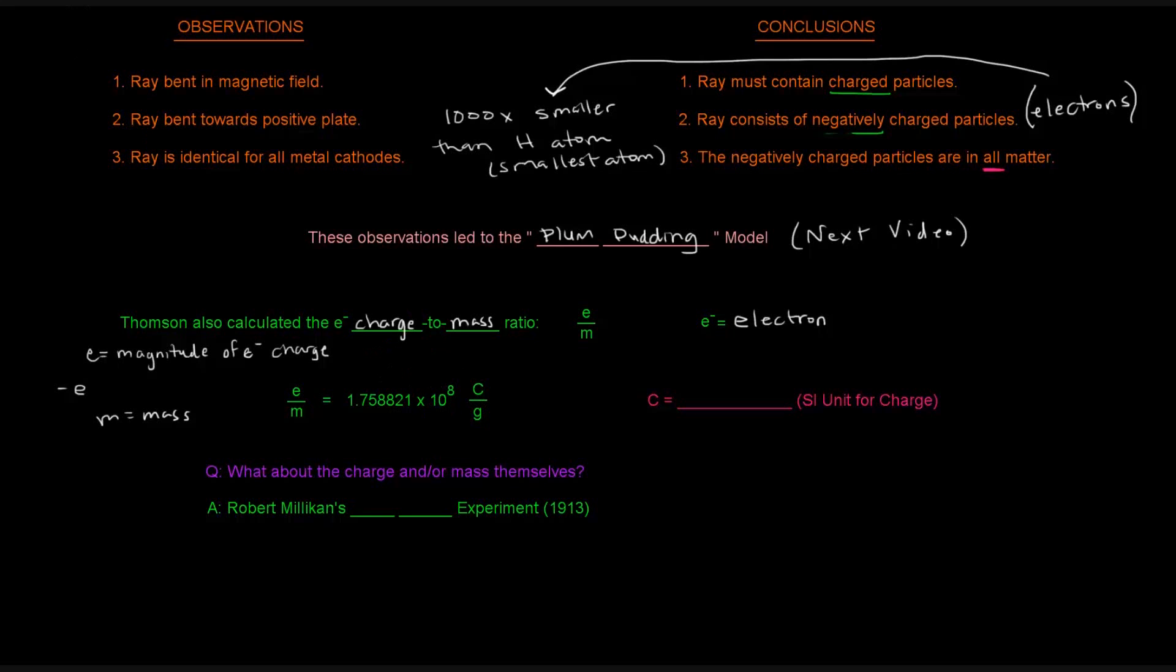C stands for Coulomb, so it's Coulombs per gram, and Coulombs are basically the SI unit for charge. So now, what was interesting is that he couldn't actually calculate the charge itself or the mass itself, right? He couldn't calculate either one, so he calculated the ratio.